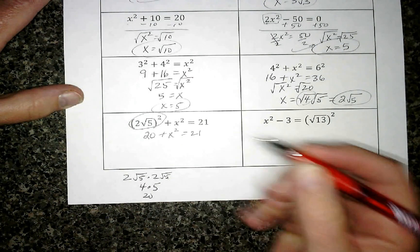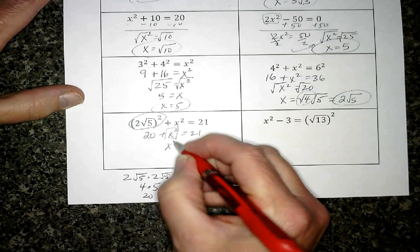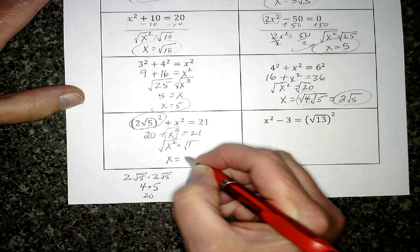Finish writing the rest of the equation. To get x² by itself, I'm going to subtract 20. Square root, x = 1.